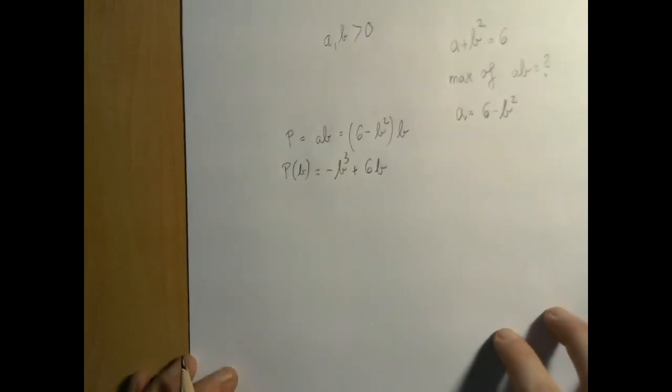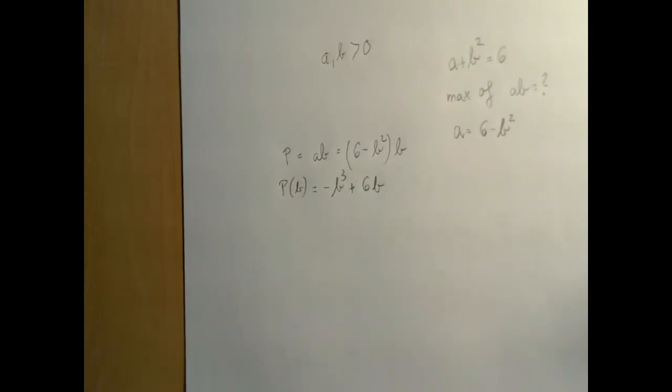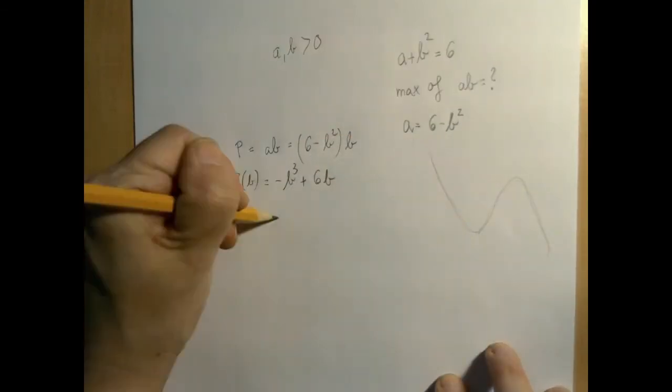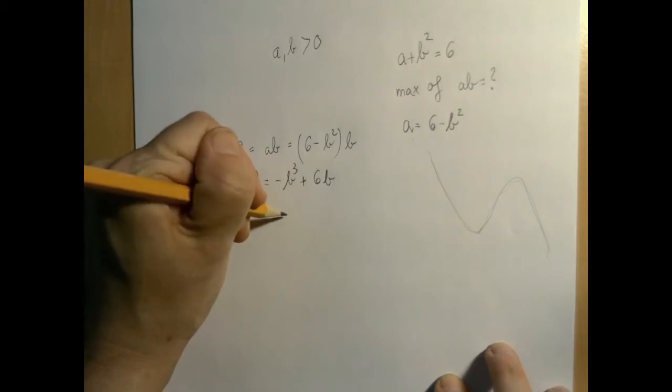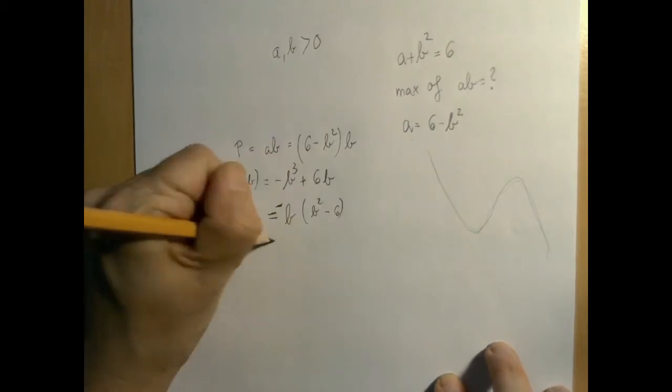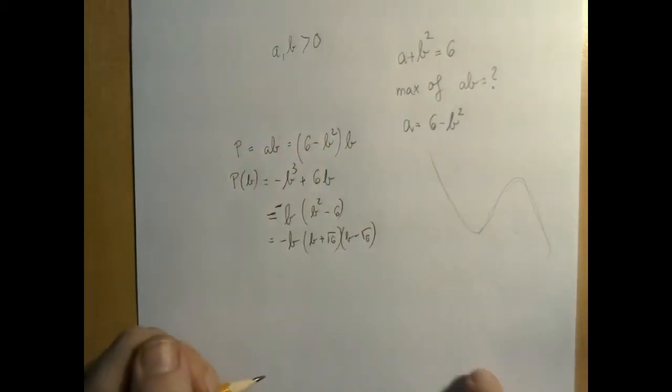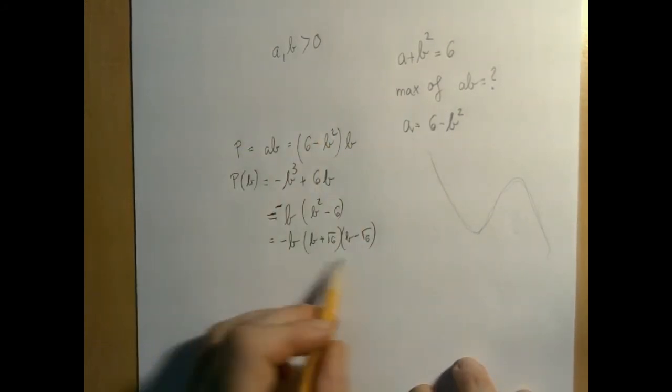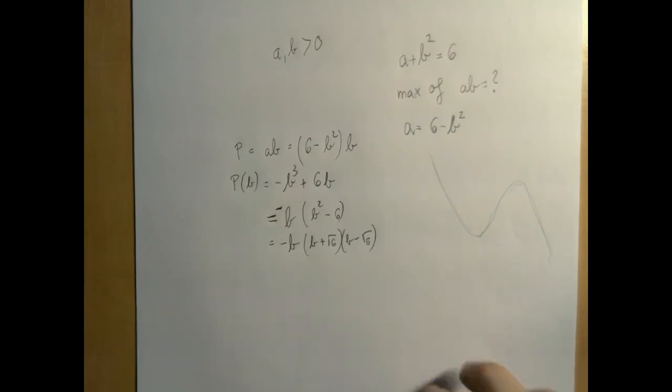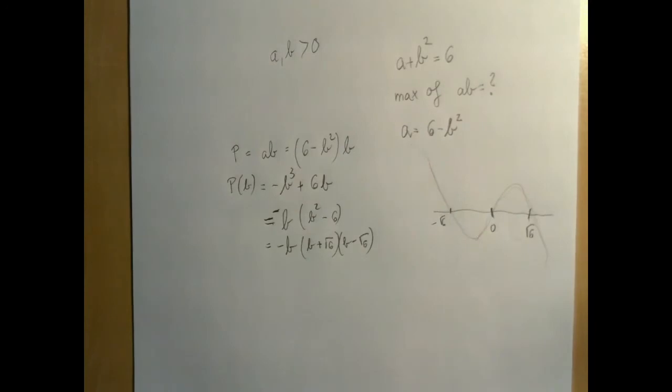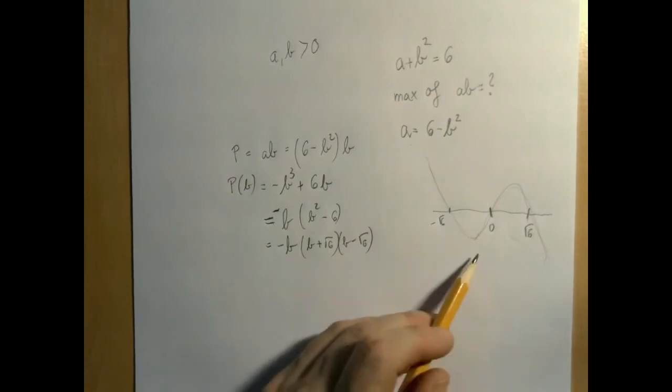Just because we're learning calculus, let's not forget what we learned in precalculus. We know what an upside-down cubic looks like. Generally it looks like this. And if we factor it, let's factor out minus B, then we have B squared minus 6. So we can factor this via the difference of squares theorem, and then we know that there are three zeros and they are symmetrical. So in this particular case, here is 0, negative square root of 6, and here is square root of 6. This is the product in terms of B.